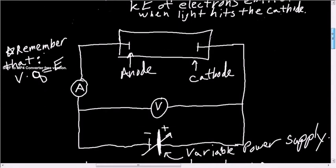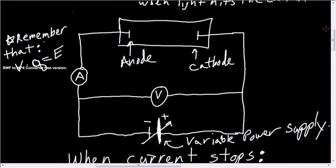So how does it work? We have a vacuum tube, shown here, to make sure that the electrons don't run into air molecules when they're being emitted, with a cathode and an anode. Here we have an ammeter that will measure the current, and a voltmeter, which will help us measure the energy of the electrons, and we'll talk about that in a minute.